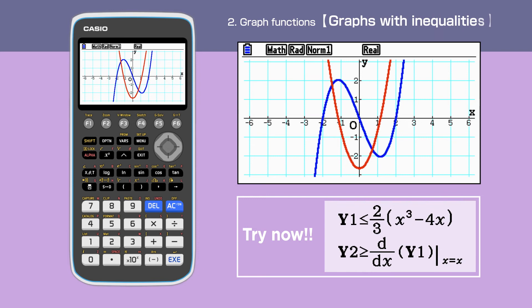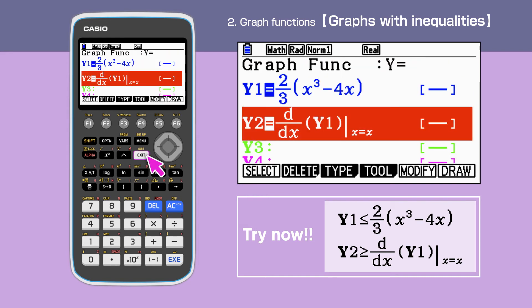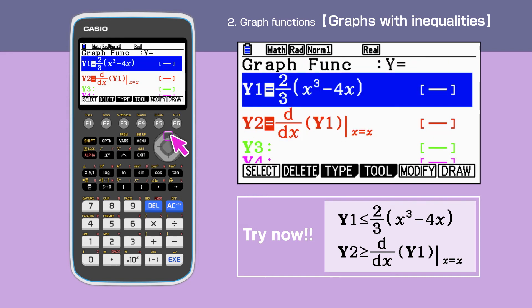Lastly, we are drawing graphs with inequalities. Go back to the graph function screen by pressing exit. Highlight the y1 function. Press F3 to display the graph type command. Entering F5 allows us to change graph type. For this example, we choose to change y is smaller than or equals to instead of y equal. This can be done by pressing F5.